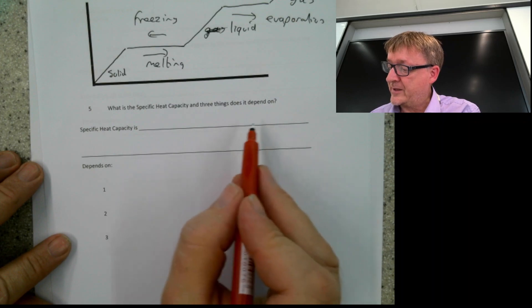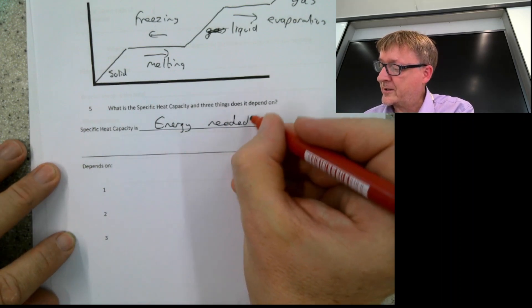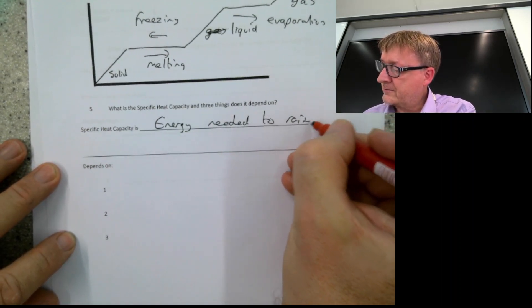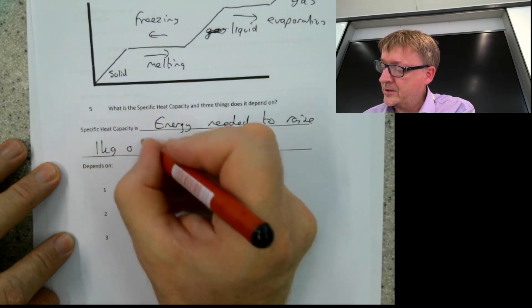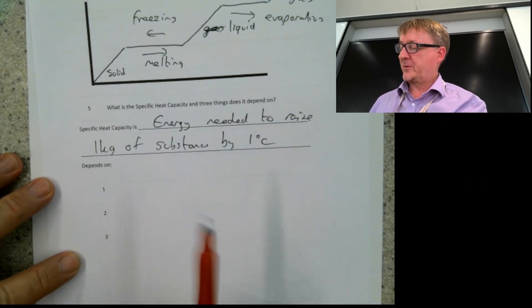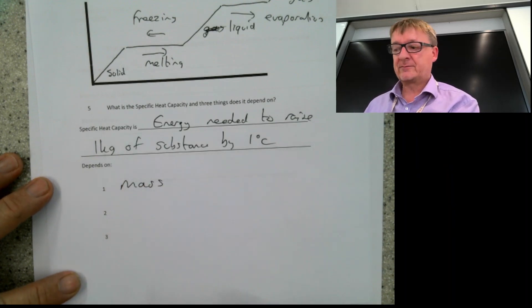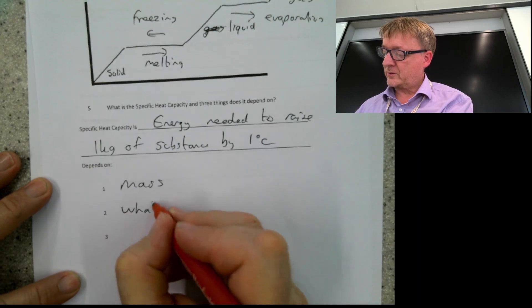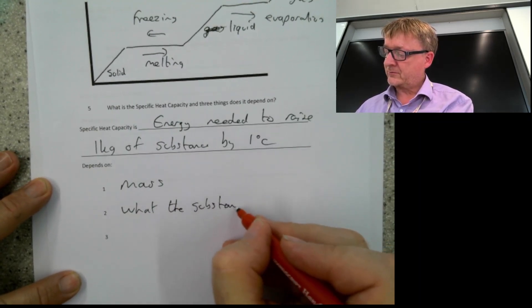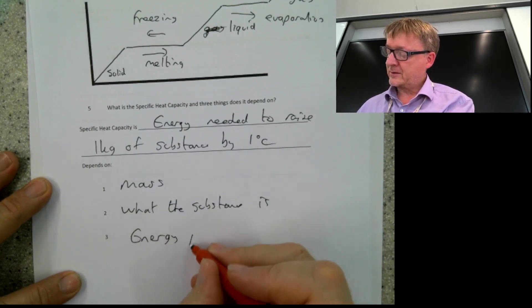Number five: what is specific heat capacity and what three things does it depend on? Specific heat capacity is the energy needed to raise one kilogram of a substance by one degree Celsius. It depends on the mass of substance present, what the substance is, and the amount of energy put in.